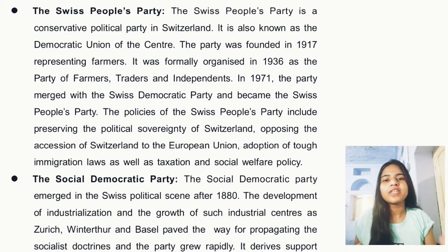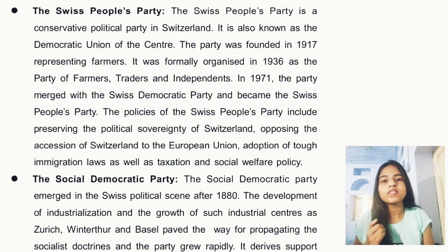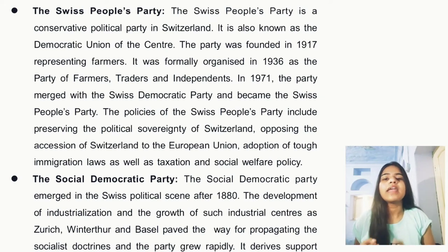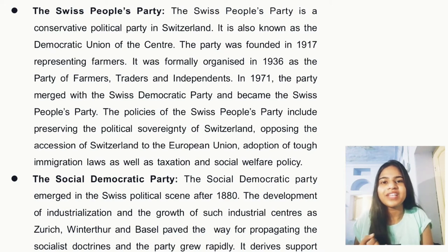The objectives of the Swiss People's Party are: first, to save political sovereignty; second, to adopt tough immigration laws; third, to have tough social welfare policies; and fourth, to ensure that taxation is also kept firm and not easy.